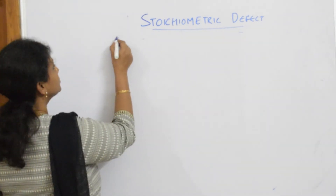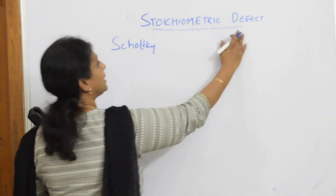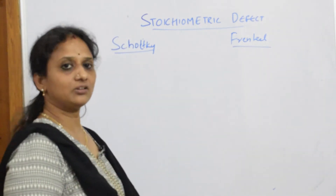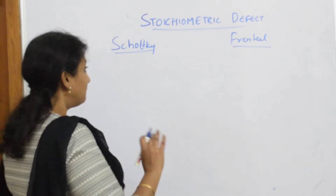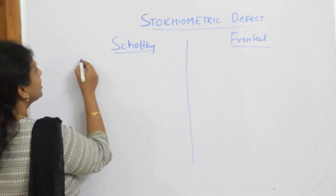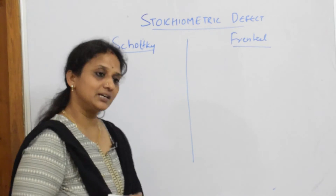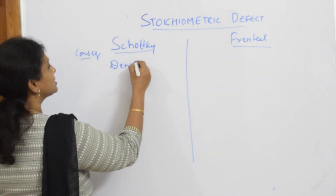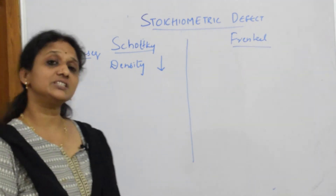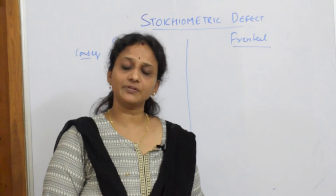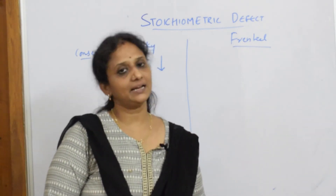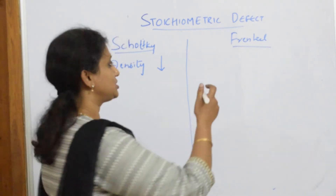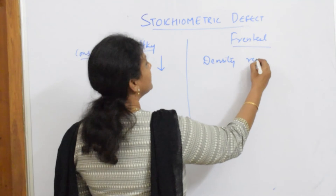In Schottky defect, because there is complete missing of both cation and anion, the density of the crystal decreases. Remember that. If asked why density decreases in Schottky defect, you say: because of the missing of one cation and one anion from the lattice point. In Frenkel defect, it is only the cation which has skipped out to the interstitial site, so density remains the same.